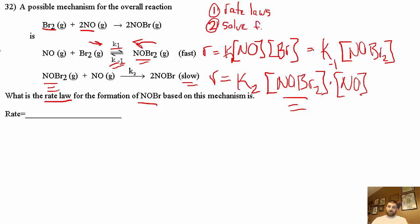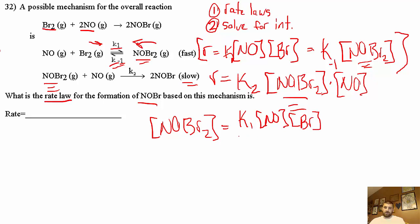The next thing we have to do is solve one of these equations for an intermediate. If we take a look at that first elementary step we can solve for the NOBr2 in terms of reactants that are actually there. We get concentration of NOBr2 equals K1 NO times Br2 all over K minus 1.